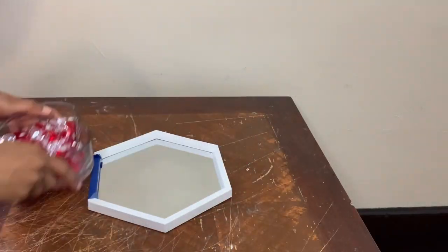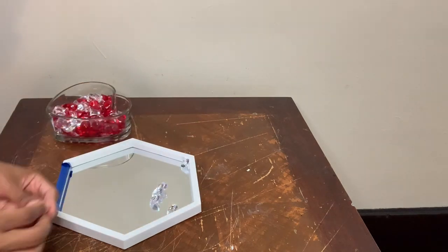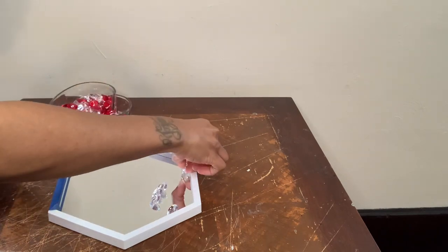Next I'm using these red and clear gems to glue them to the inside perimeter of my mirror, but I'm going to start off by gluing all the clear gems around the perimeter first.